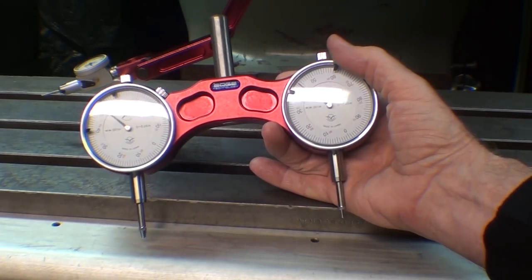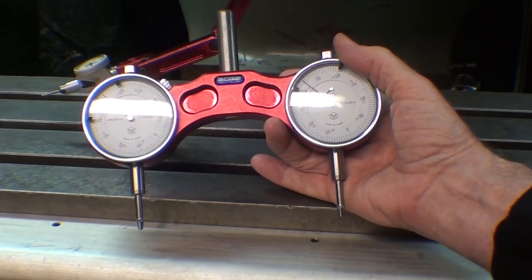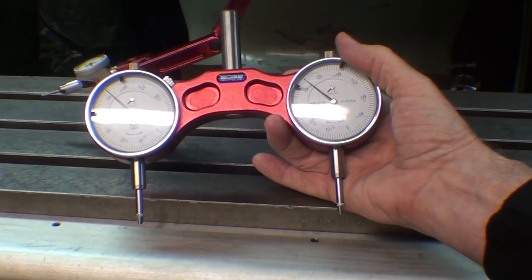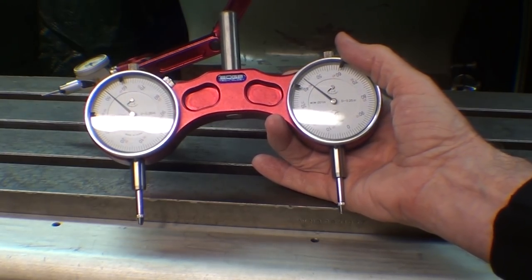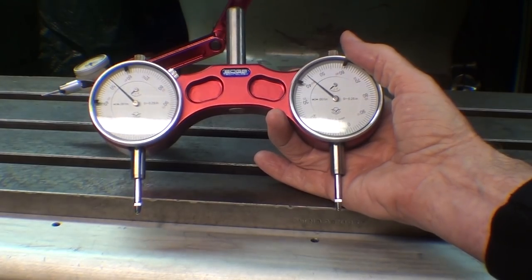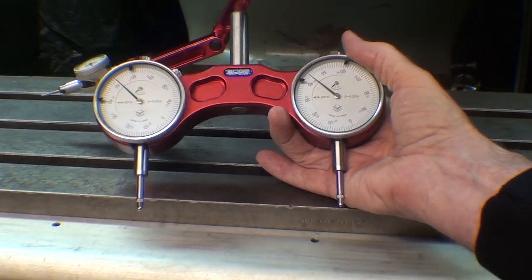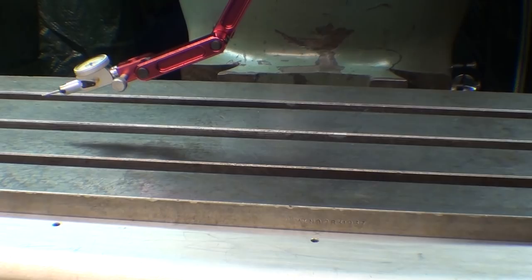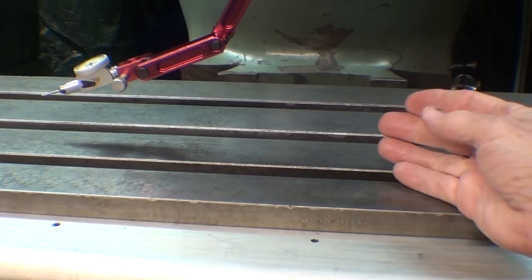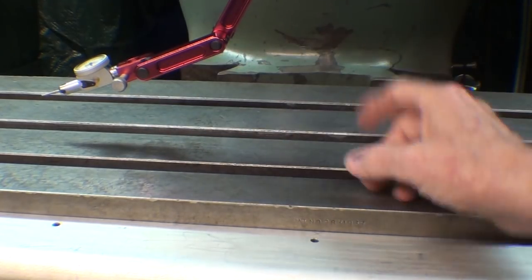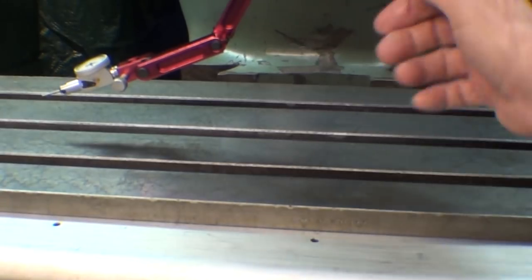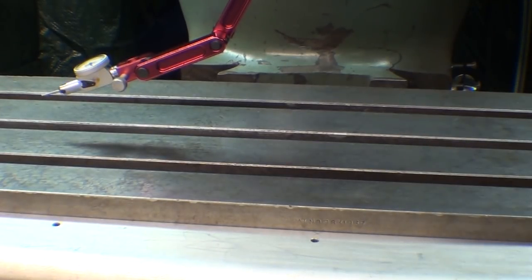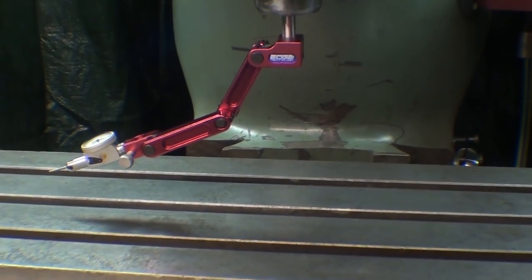I made a video quite a while back showing how to use the ProTram, also by Edge Technology, and I may show that again as they have several different models, one quite a bit smaller than this. But these are rather expensive instruments compared to just using a standard test indicator in one of these holders, and the holders are more reasonably priced, typically in the $40 or $50 range.